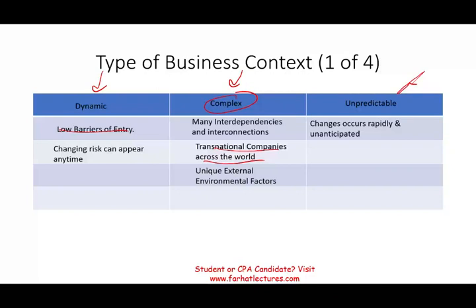An unpredictable environment is one where changes occur rapidly and unexpectedly. Here we are dealing with technology companies or pharmaceutical companies where your product could become obsolete very quickly because of new technology.